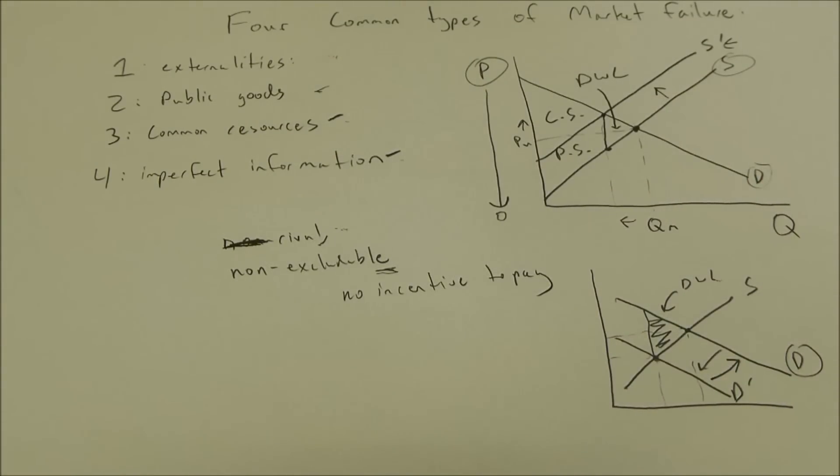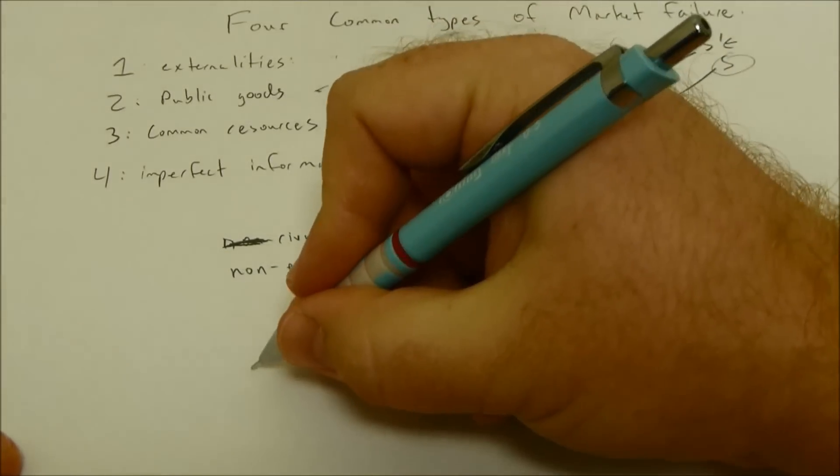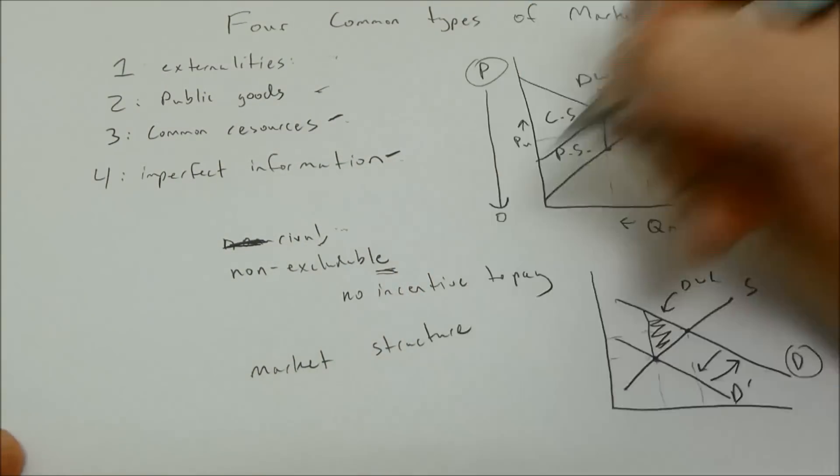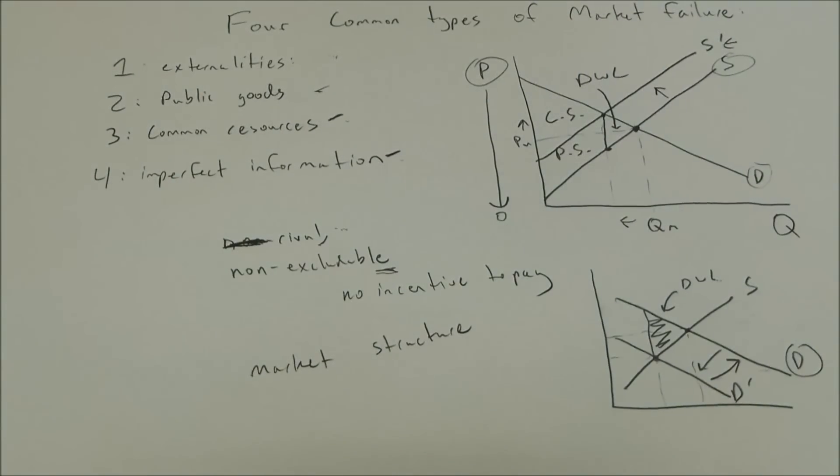The other major type of market failure that some people go back and forth on are different types of market structure. But that is a huge discussion in and of itself that we can go over in a future video.